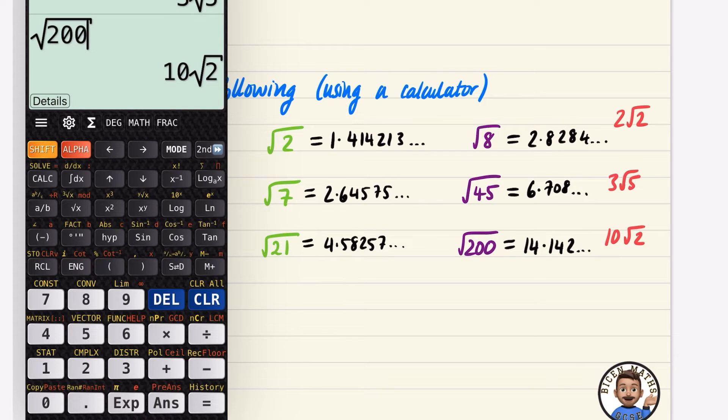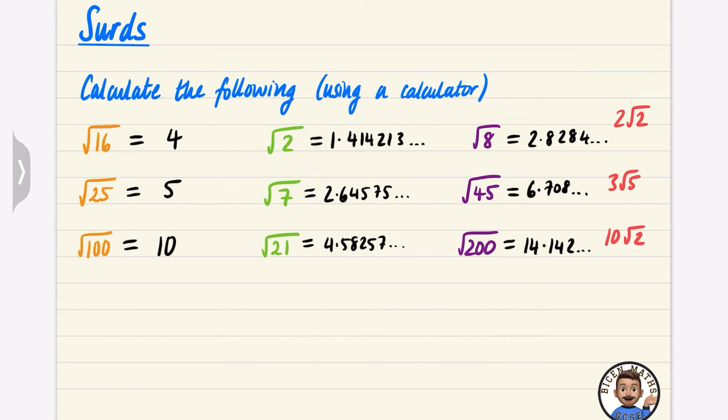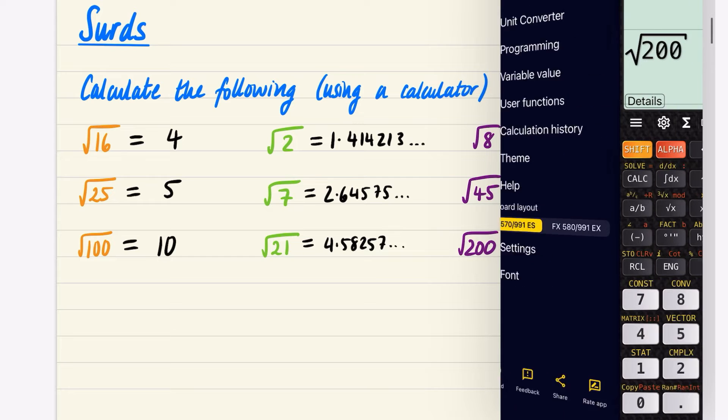Now it's important to note these numbers that I've done in black here - if you multiplied 6.708 by itself, you should get something that's close to 45 because that's the square root definition, but it doesn't quite give you that. If I do 6.708 squared, I actually get 44.997, so the reason I don't get the exact value is because of these dot dot dots that I've got at the end - that number should be going on forever. Whereas if I do 3√5, put it in brackets and I square that, I do get the answer 45. So these different forms of how we write things are going to be really important.